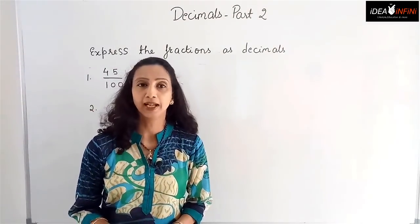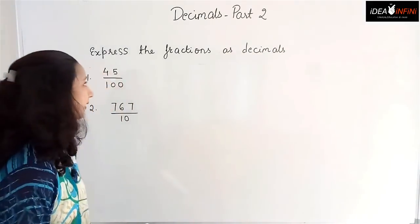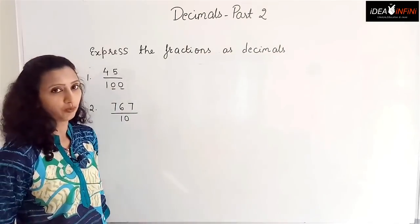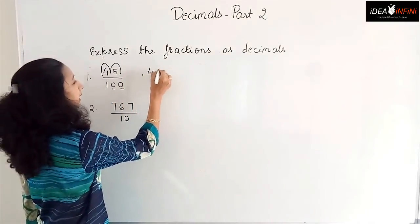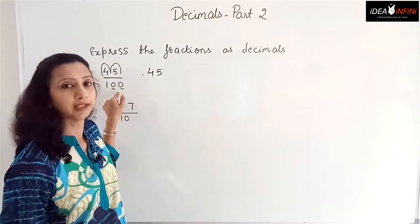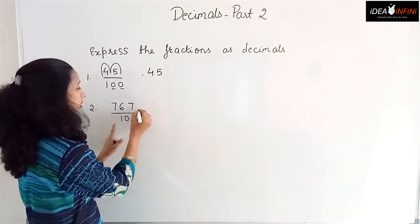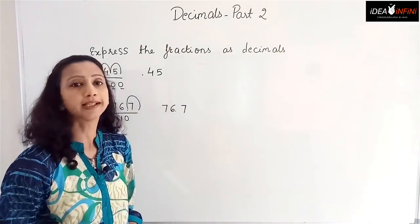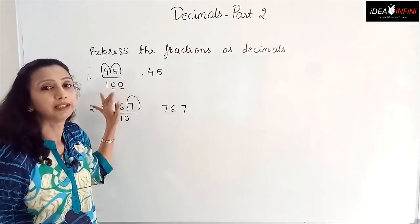In the last part we saw how to express fractions as decimals. Quick recap: for 45 by 100, we observe the number of zeros in the denominator — there are two zeros — so we start from the right and take two jumps left to place the point, giving 0.45. Similarly, 767 by 10 has one zero, so we get 76.7. This is how we convert fractions to decimals when the denominator is a multiple of 10.